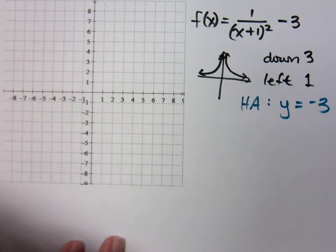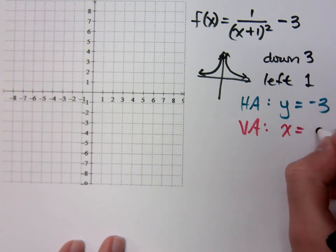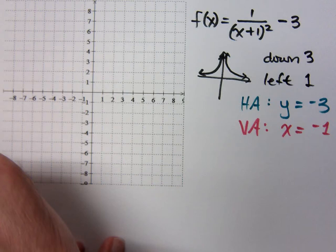...negative 3. And what about your vertical asymptote? So if it's x equals negative 1...